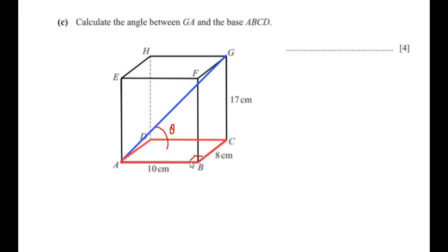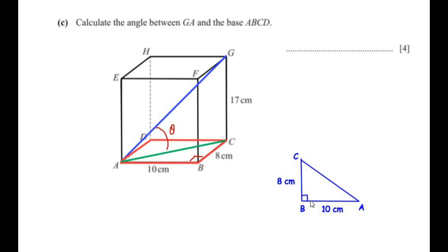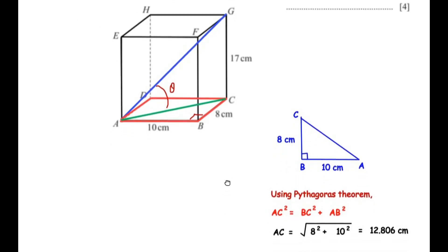Let us connect points A and C and consider right angle triangle ABC, right-angled at point B. The length of BC is 8 centimeters and the length of AB is 10 centimeters. We need to find the length of AC — the hypotenuse — in order to make a connection between triangle ABC and right angle triangle AGC. Using the Pythagorean theorem: